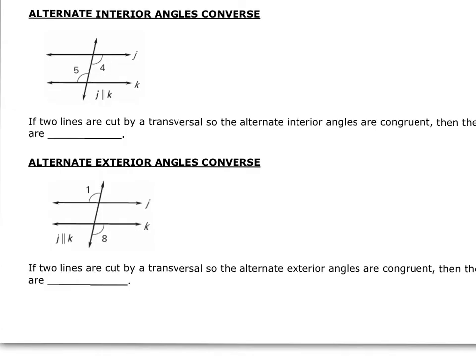We can also take the converse of the alternate interior angle theorem and the alternate exterior angle theorem. If two lines are cut by a transversal so that the alternate interior angles are congruent — you can see them marked congruent with arcs over the vertex — then we can say the lines are parallel.